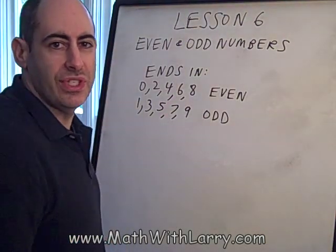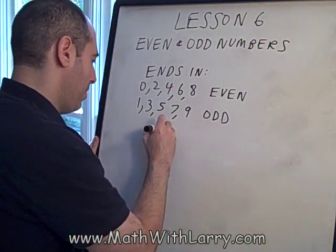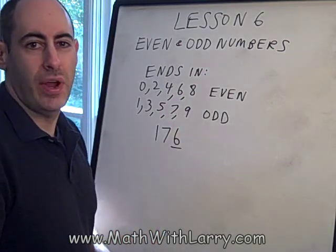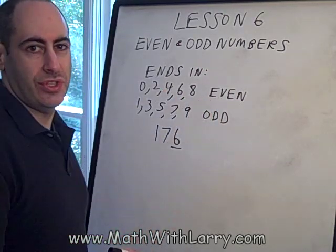Let's look at the number 176. All that matters is the rightmost digit, and that shows us that this is an even number.